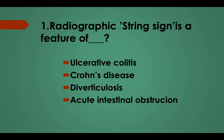Radiographic string sign is a feature of: Option A, Ulcerative colitis; Option B, Crohn's disease; Option C, Diverticulosis; Option D, Acute intestinal obstruction.